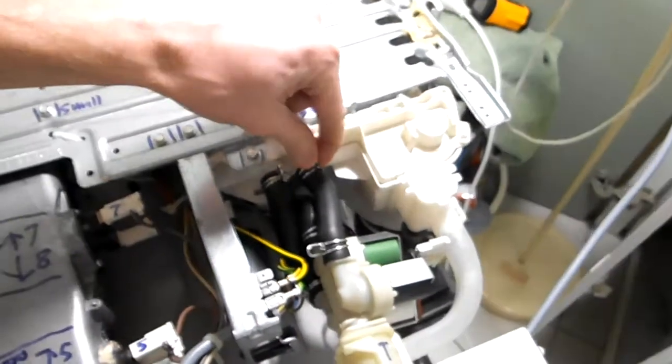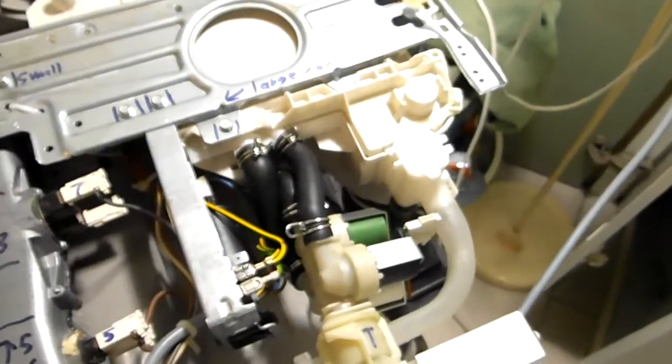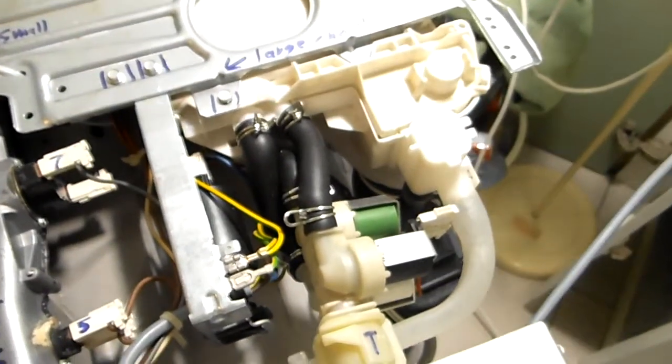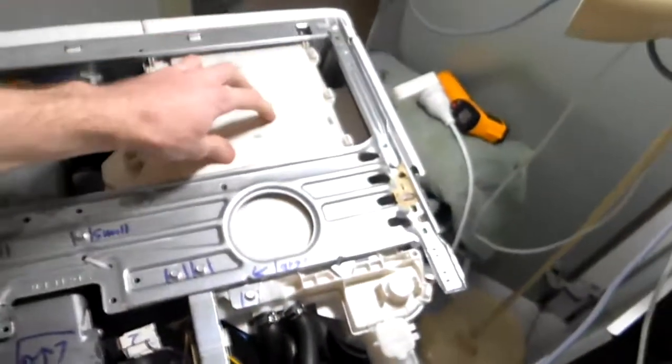But of course you can actually just undo all these little barbs with a pair of pliers and take the whole thing away and work on it, which isn't a problem. The other problem that I had is this whole white section here is actually the bit that you put all your chemicals in.